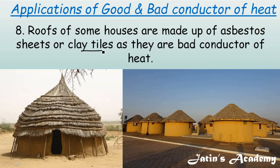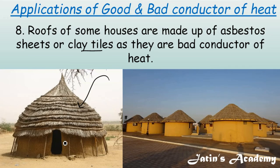The eighth application is that roofs of some houses are made up of asbestos sheets or clay tiles. Asbestos sheets are bad conductors of heat, which do not allow outside heat to come inside the house, so people inside do not feel as hot during summer days.